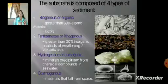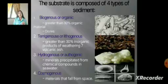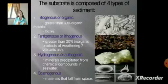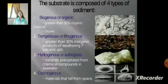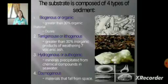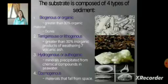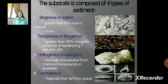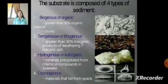The biogenous sediment contains skeletal and fecal remains. Next, we have the lithogenous, which contains greater than 30% inorganic products of weathering and volcanic ash. Then we have the hydrogenous or autogenic type, which is a mineral precipitated from chemical compounds in seawater. And the last is the cosmogenous, which is materials that fall from space.